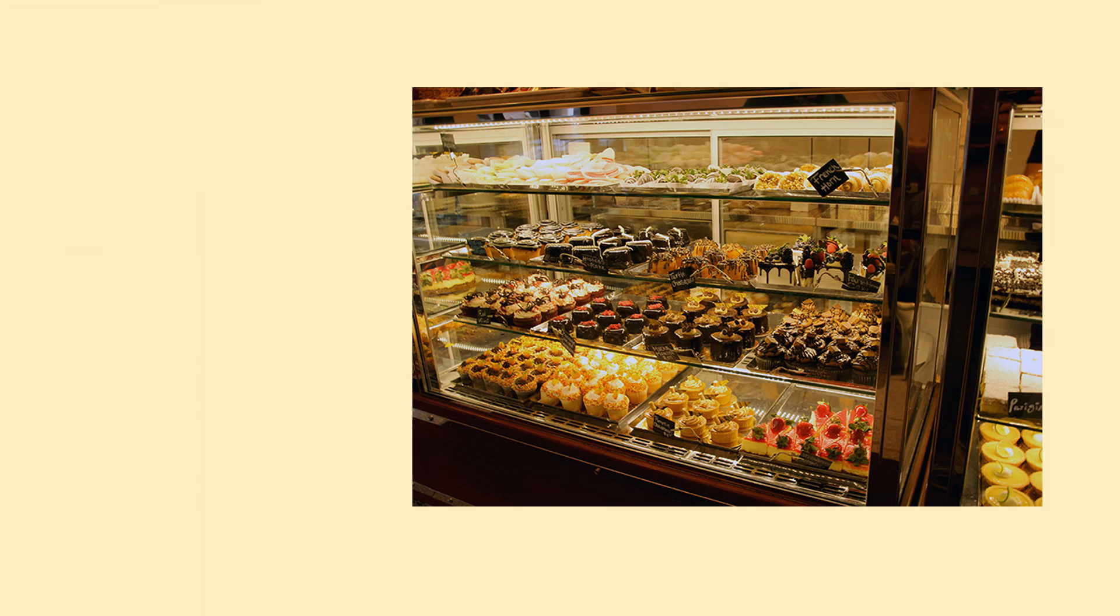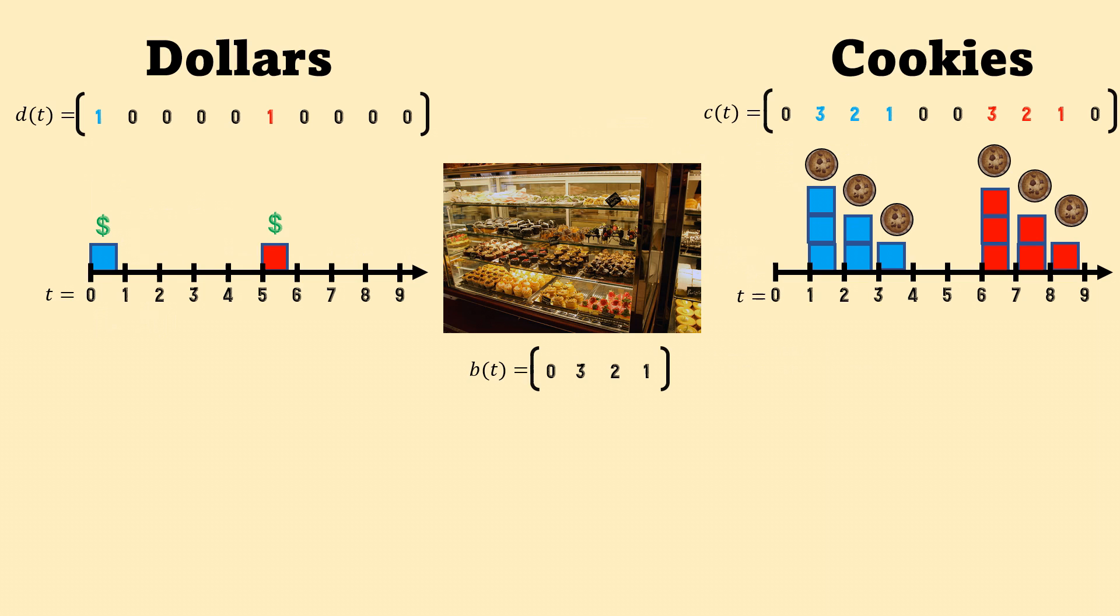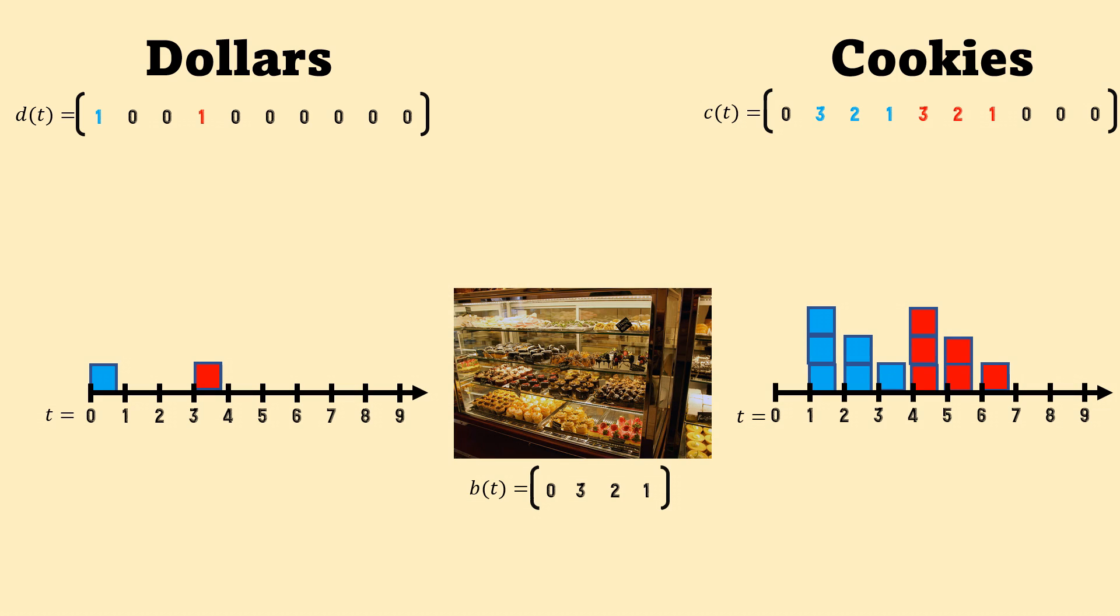Now let's say you move out of town and you find another bakery. This bakery has a different policy. If you chip in one dollar, it responds with three cookies one day, two cookies the next day, and one cookie the following day. This is what the linear time invariant properties would look like for this bakery.